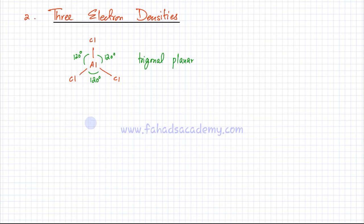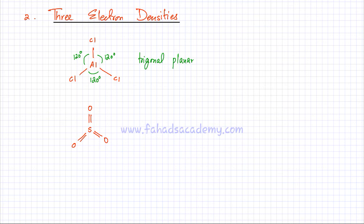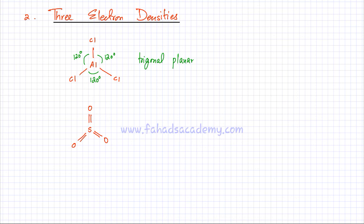Let's pick another example of a molecule with trigonal planar geometry: sulfur trioxide, SO3. Sulfur is making double bonds with three oxygen atoms. It's making three double bonds, and the geometry and shape of the molecule is again trigonal planar with angles of 120 degrees, because there are three electron entities. Think of the double bond as a single electron entity since the electrons are grouped together.